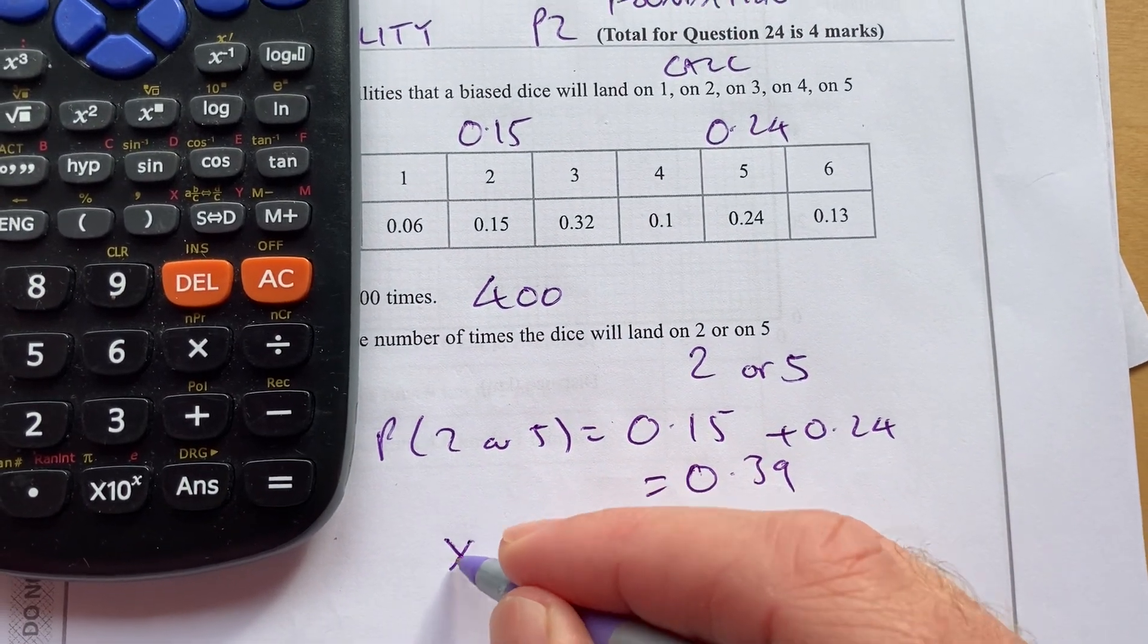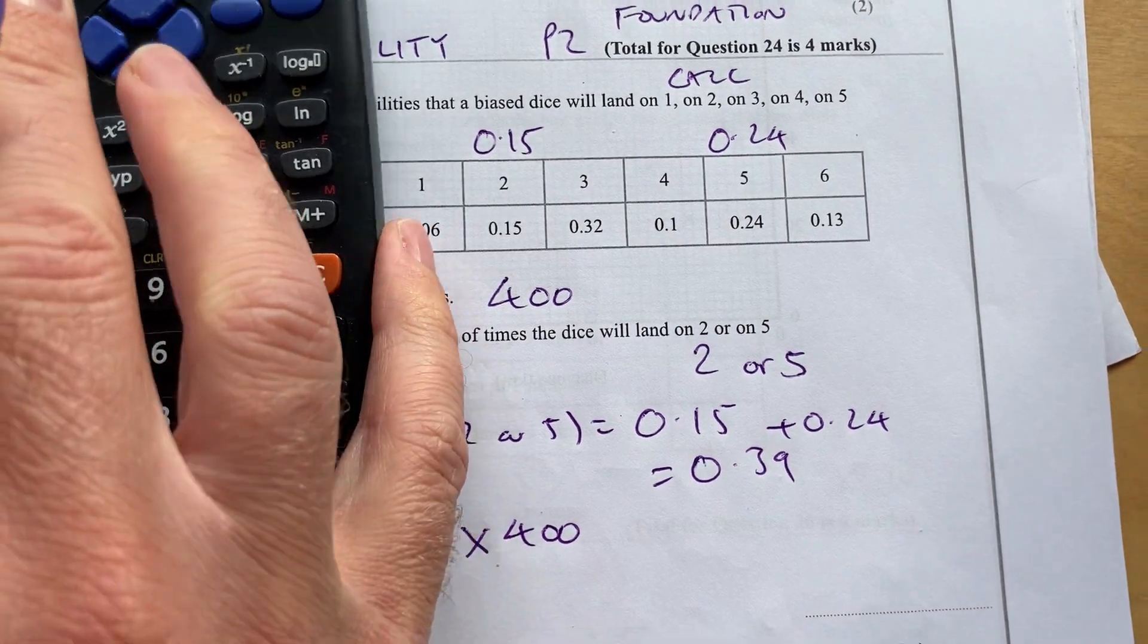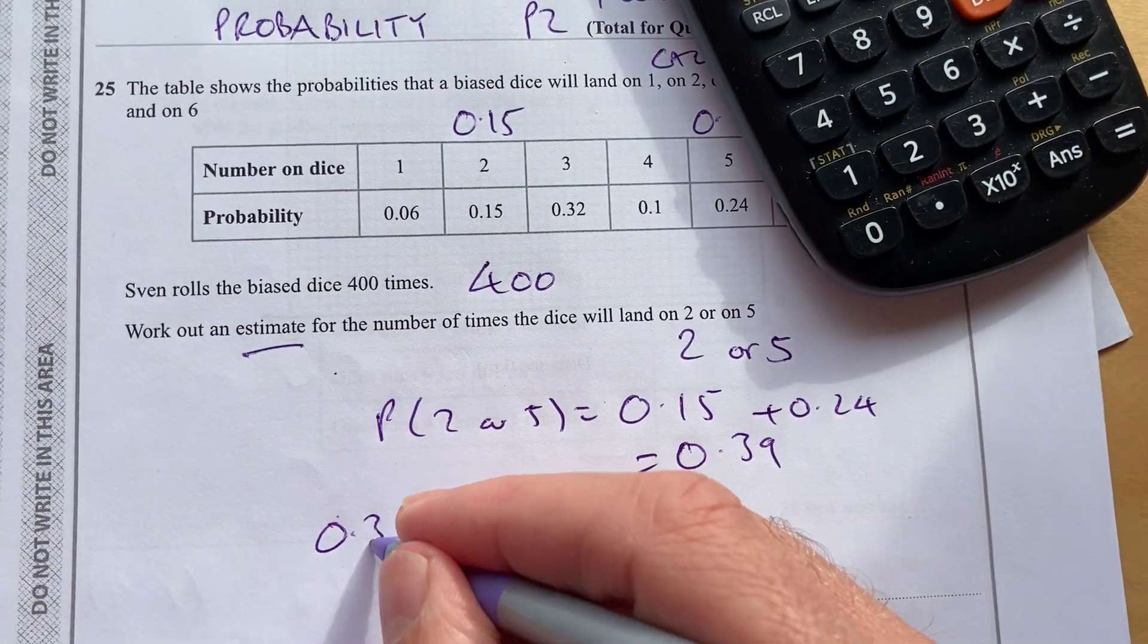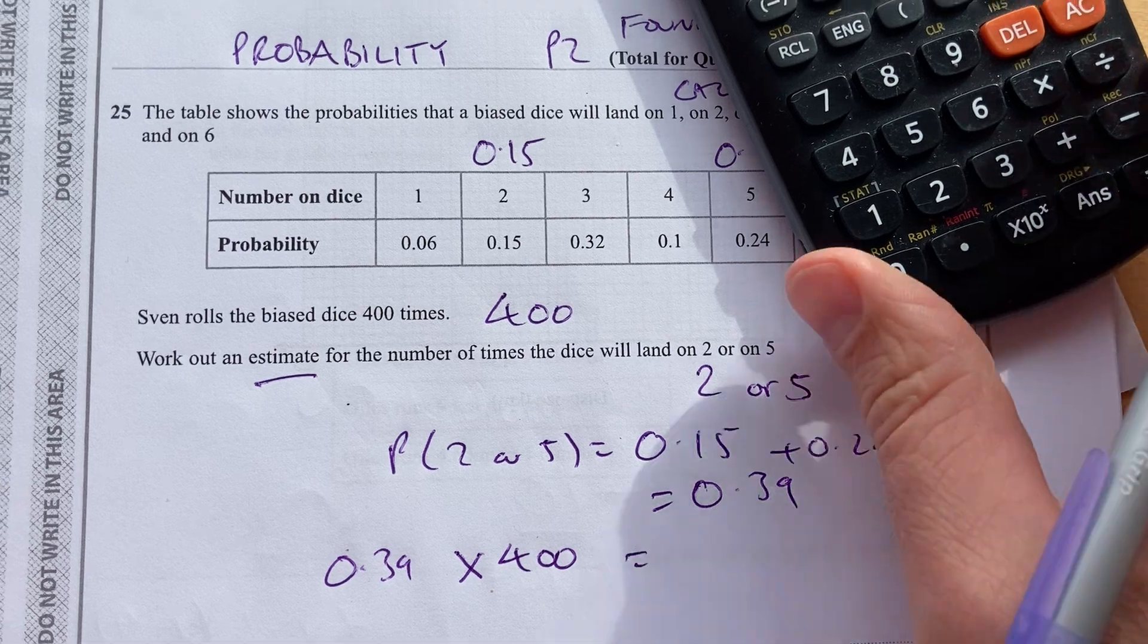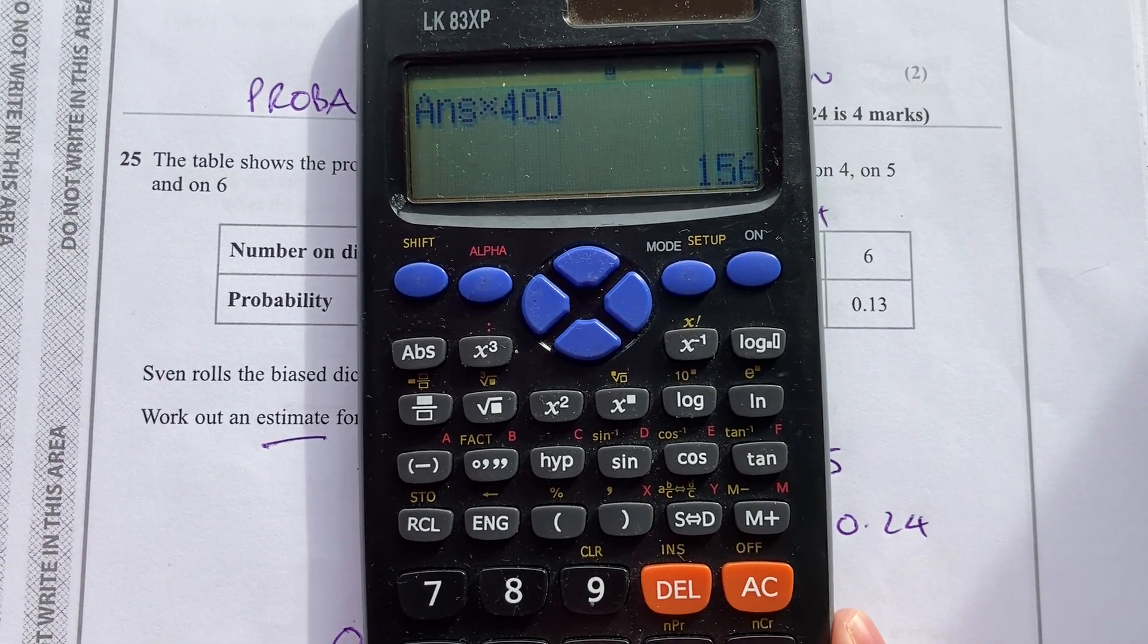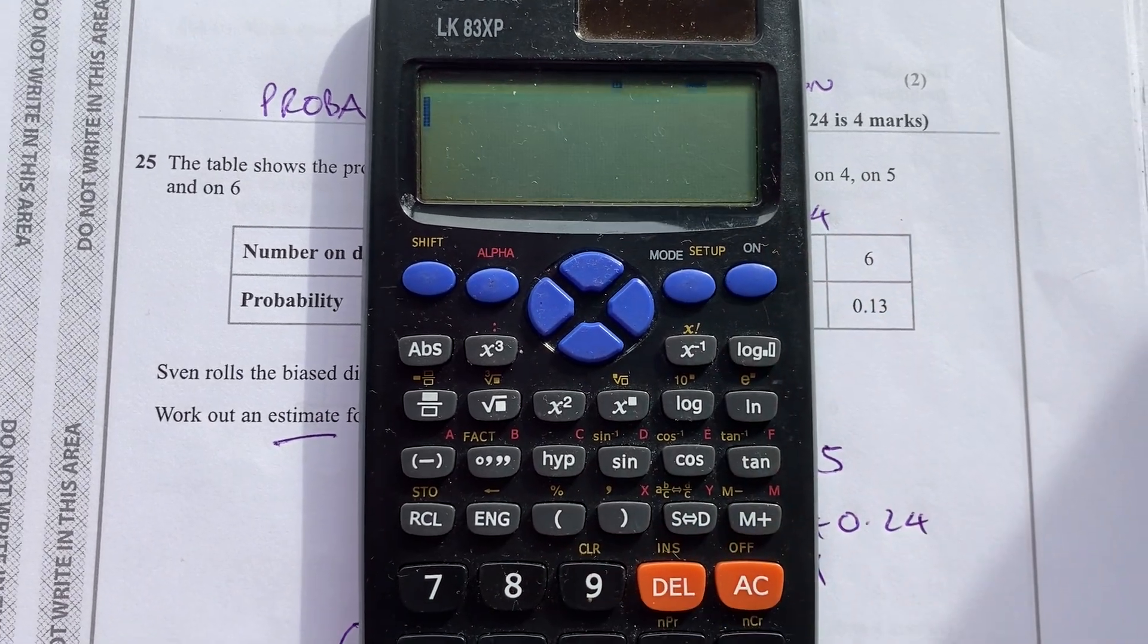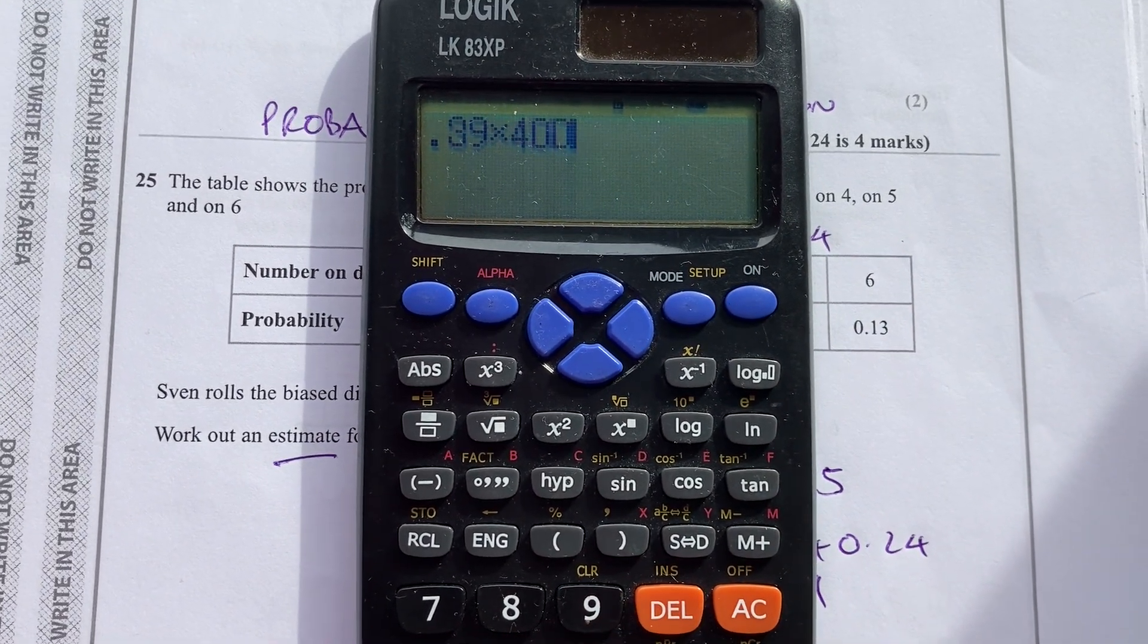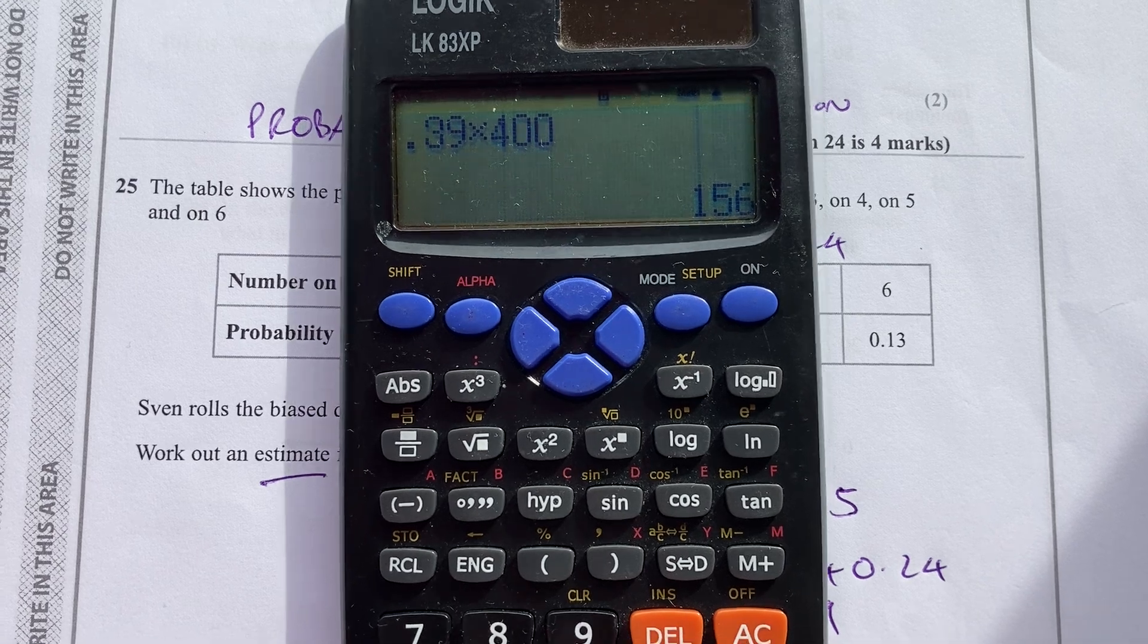Now, if we roll it 400 times, we do 0.39 times 400, and we get 156. So 0.39 times 400 is 156.